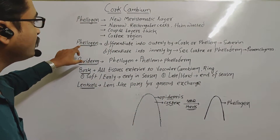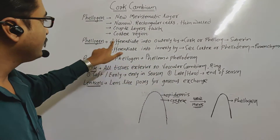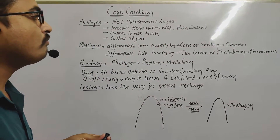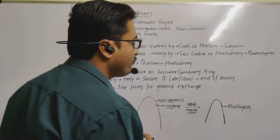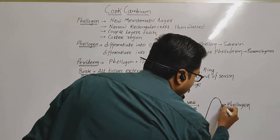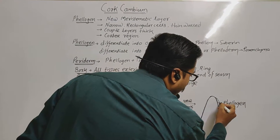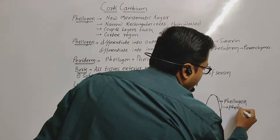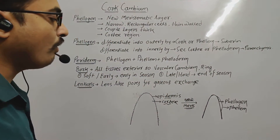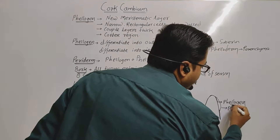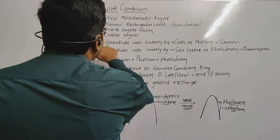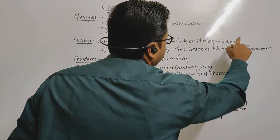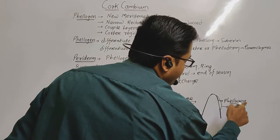Phelogen differentiates into two new tissues. When phelogen differentiates outwardly, it forms another layer also known as cork or phellum. When phelogen differentiates inwardly, it forms phelloderm. Phellum, also known as cork, is made of a chemical called suberin. Suberin is impervious to water.